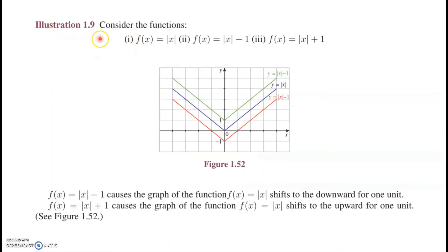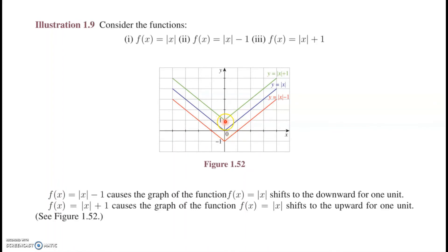In Illustration 1.9, consider f(x) = |x|, f(x) = |x|+1, and f(x) = |x|−1. The original function is y = |x|. Adding 1 shifts the graph upward by one unit — you can see the green curve. The red graph is |x|−1, so you can see the shift downward.